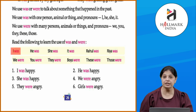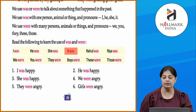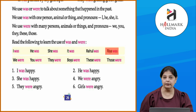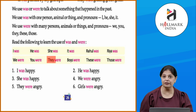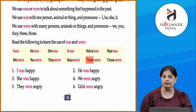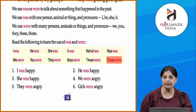Now read the following to learn the use of 'was' and 'were': I was, he was, she was, it was, Rahul was, Ria was. We were, you were, they were, boys were, these were, those were.